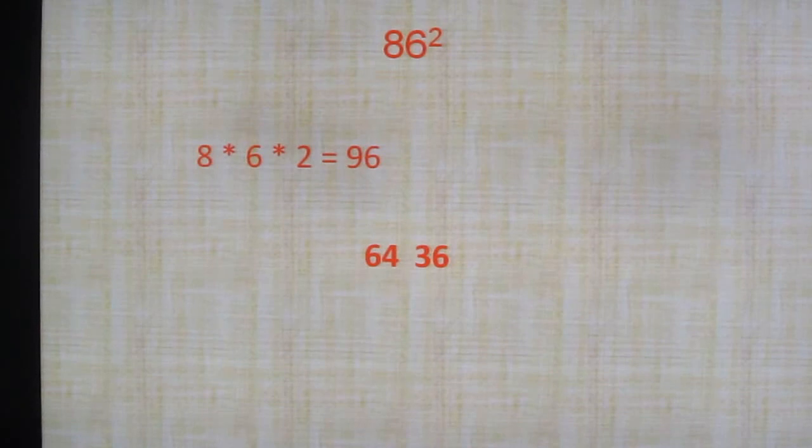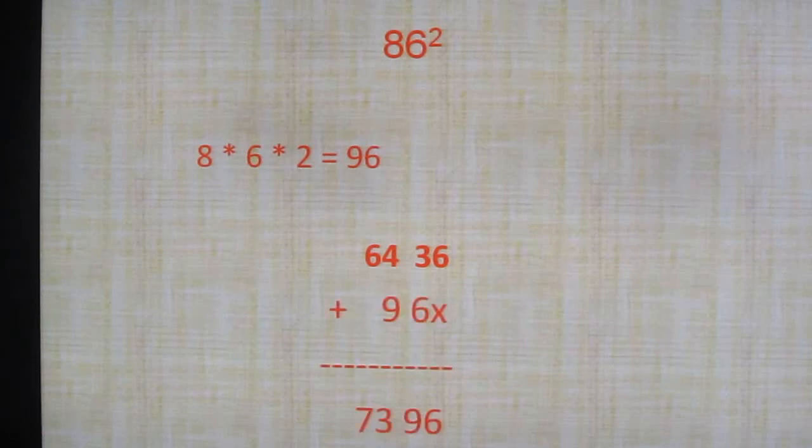What is 86 square? 8 square is 64. 6 square is 36. 6436. So what I need is 8 times 6 times 2. That is 2AB. I have got 8 square. That is 64. I have found 6 square, 36. So A square is available. B square is also available. I need 2AB. The 2AB is 96. So I should write it as 96X. So once I add this up, so what will be my answer? 7396. So 86 square equal to 7396.